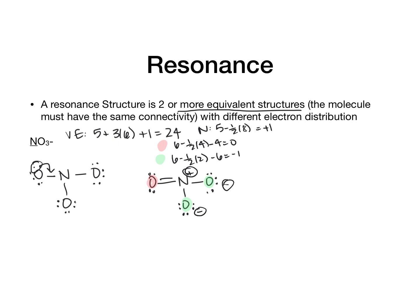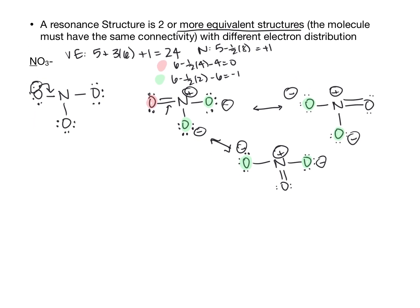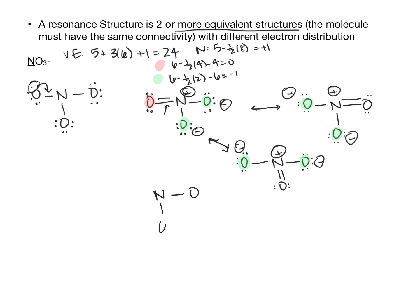Why is the double bond on the left and not pointing down or on the other side? That's what resonance is. The double bond could be in any of these three positions, so we draw all three resonance structures. All of the single-bonded oxygens have the same charge (negative one), and the nitrogens all look the same electronically — they all have the same formal charge. You can draw a composite structure with partial bonds to each oxygen, where the dots show that the electrons are delocalized over the entire molecule.